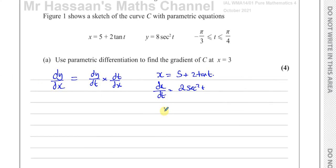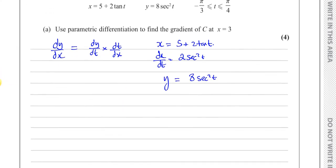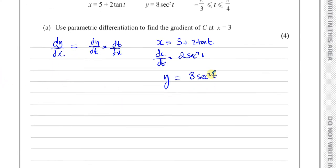For y, y is equal to 8 times the secant squared of t. We want to find dy dt. Now, this is a function within a function. You have something squared, and inside that squared bracket, you've got a function. So we can use the chain rule here. Let me just set it up first, so it's more understandable. This is like 8 times the secant of t, all squared.